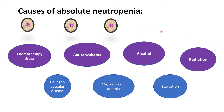Causes of absolute neutropenia include drugs such as chemotherapeutic agents, anticonvulsants, chloramphenicol, antibiotics, benzodiazepines, and antithyroids, as well as radiation and toxins like alcohol and benzene compounds. Hematologic causes include megaloblastic anemia, myelodysplasia, marrow failure, and marrow replacement. Infections, starvation, and hypersplenism can also result in absolute neutropenia.